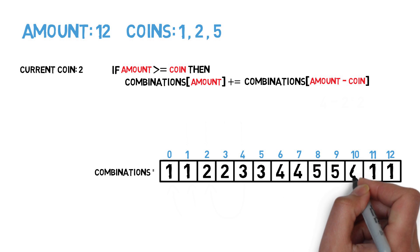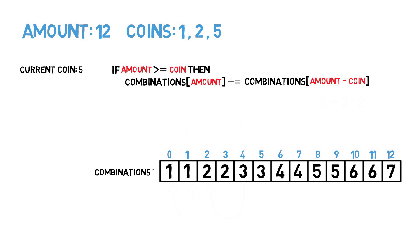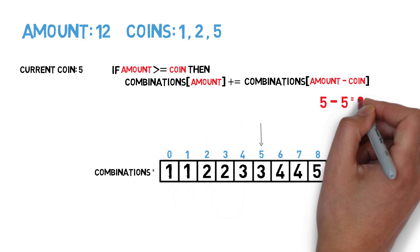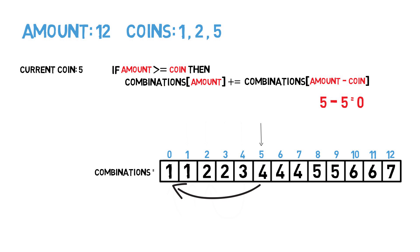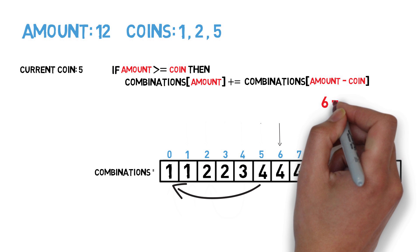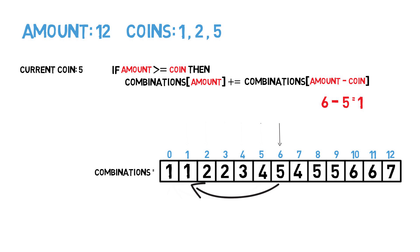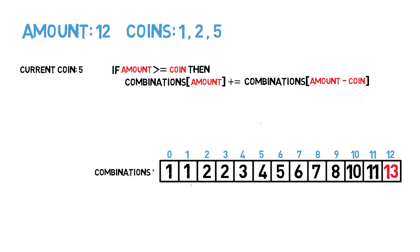Now let's look at our last coin 5 and iterate through the array. Since coin 5 is greater than amounts 1, 2, 3, and 4 we skip them. At amount 5: 5 minus 5 equals 0, we take the value at amount 0 and add 1, giving four total combinations. For amount 6: 6 minus 5 equals 1, we take the value from amount 1 and add 1, giving five combinations. We continue this for the rest of the array to get our final results — a total of 13 combinations for amount 12. If you were asked to find the total combinations of any number in the array, you just grab it from its location.